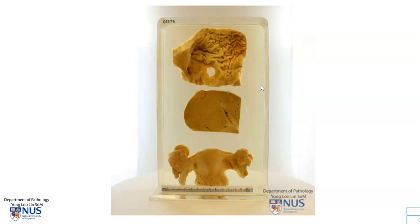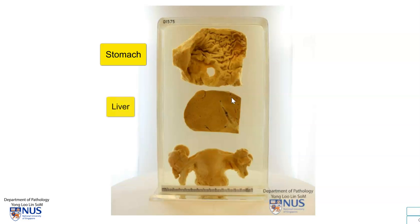Hello, this is a pathology specimen which comprises three different organs. We have here the stomach with the gastric rugae, there is a slice of liver here, and this is the uterus with bilateral adnexal structures. Let's take a look one by one, and let's first have a look at the stomach.